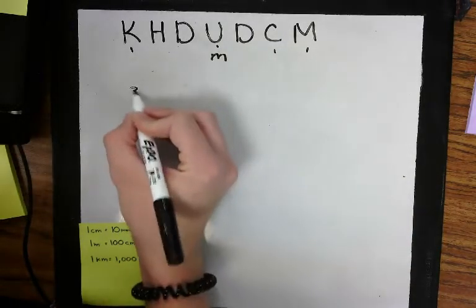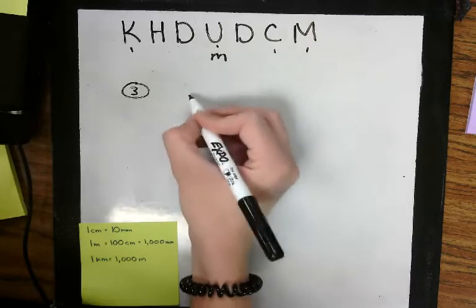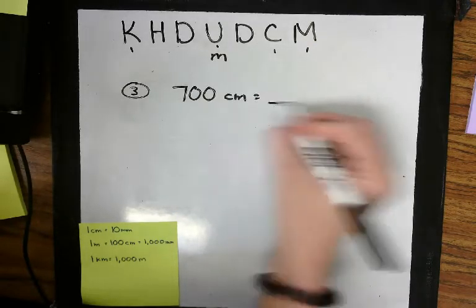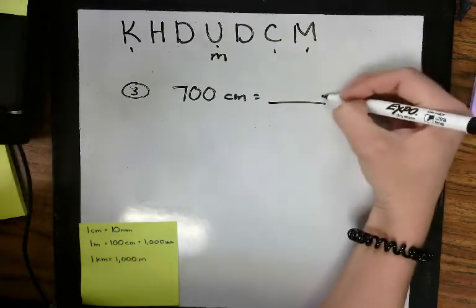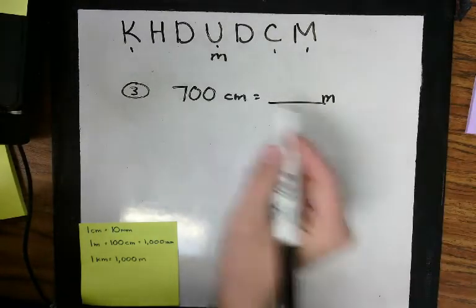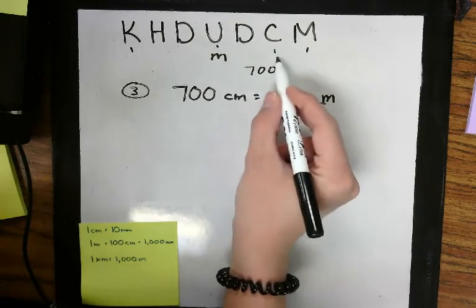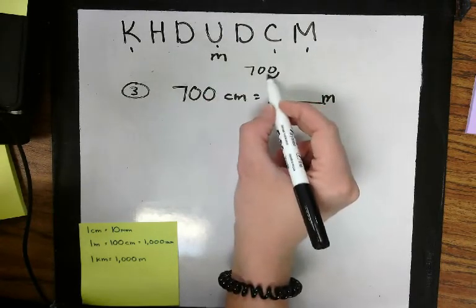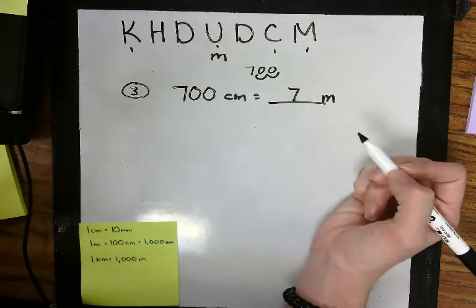Let's do number 3 in the book. It asks us to convert 700 centimeters into meters. I can think of this as 700, starting at centimeters, I need to get to meters. Moving 1, 2 places, that's 7 meters.